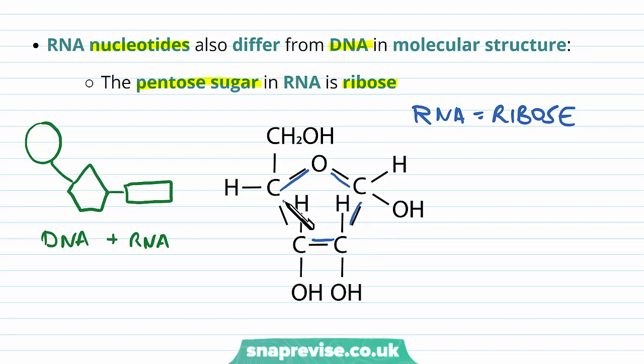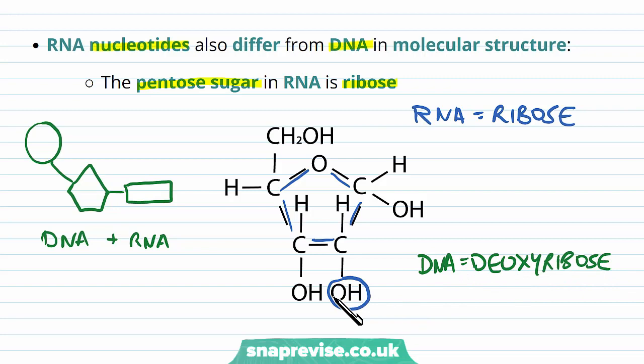We've got five carbons, which indicates that it's a pentose. And down here on carbon number two — the bottom right carbon — you can see that we've got an OH group, so there's an oxygen present in that group. But in DNA, we call the sugar deoxyribose because this ribose sugar is actually missing this oxygen. So if you see this sugar without the O, then it must be the deoxyribose that you find in DNA. But in RNA, it has the oxygen present, and so we call it ribose.